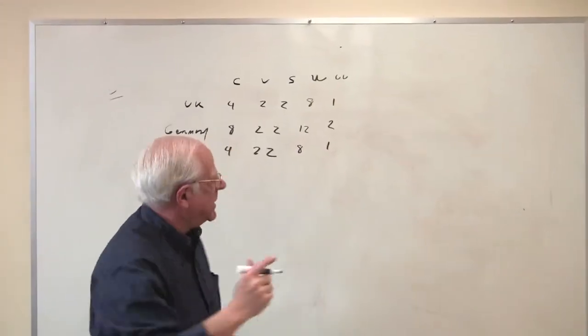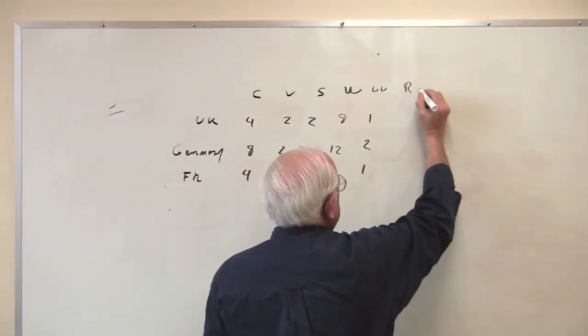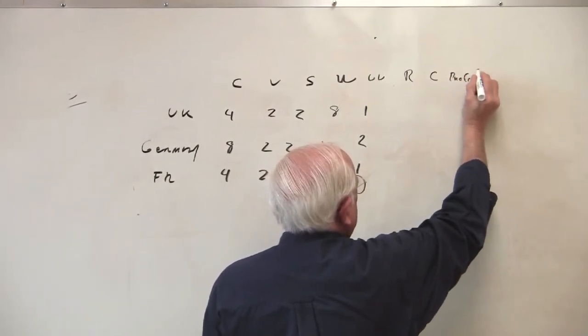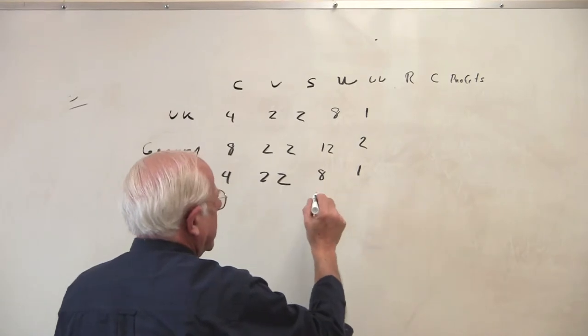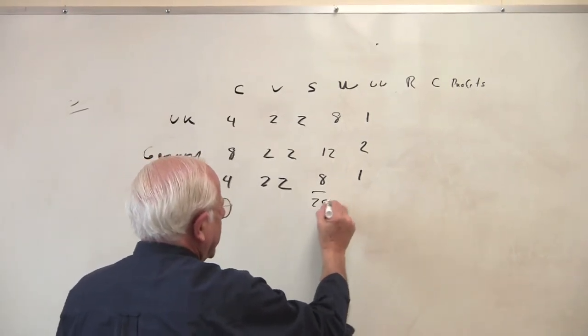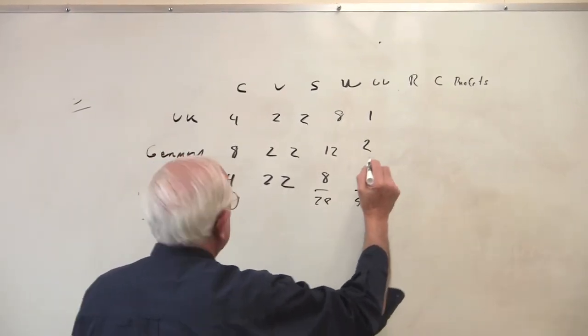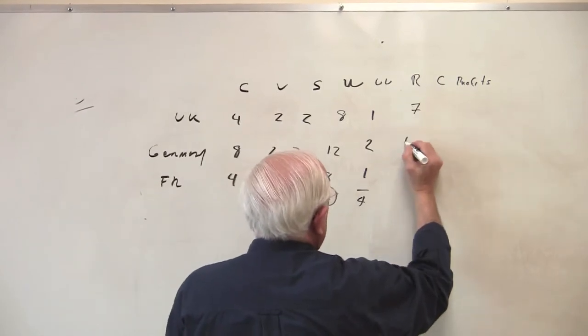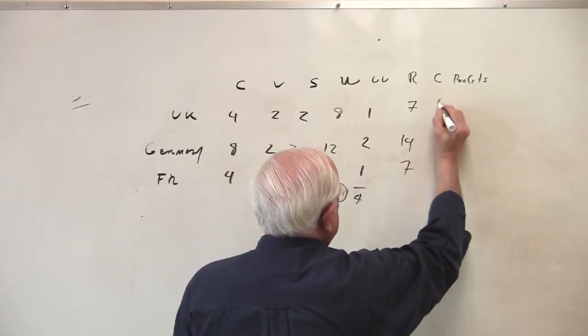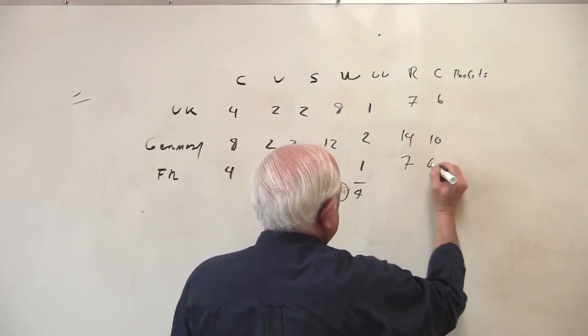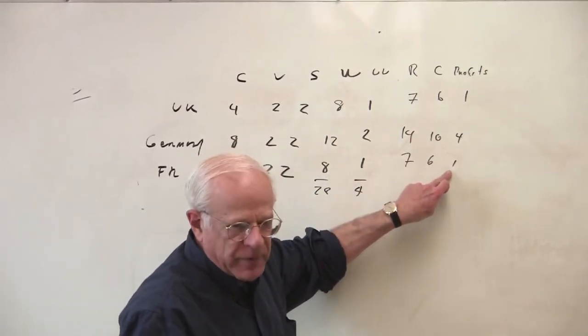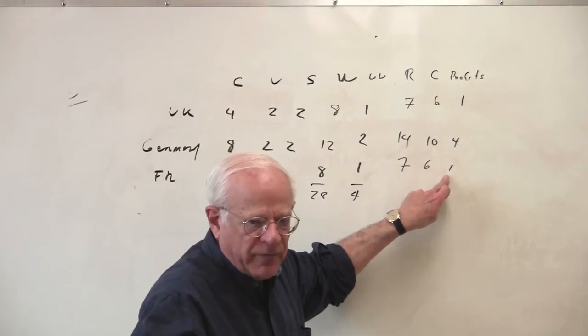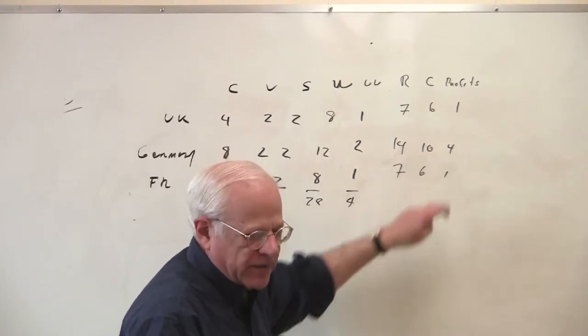And let me put in, because it's useful to me, the revenues, the costs, and the profits. Okay. The new price was 28, 4. That was then 7, 14, 7, 6, 10, 6, 1, 4, 1. And you know, that's the problem. This new vector of profits is the problem for the British and the French and the success of the Germans.